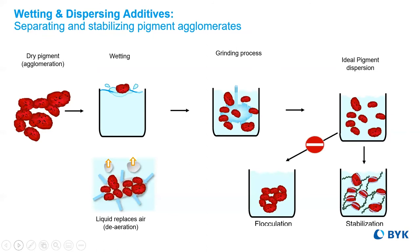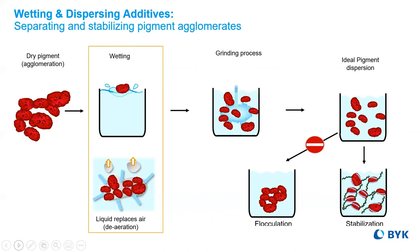When dry pigments are received, the first step is to homogenize them into a liquid coating. This initial process is wetting the pigment into the system matrix. Wetting takes place by displacing the air around the pigment, allowing for an easier dispersion process.